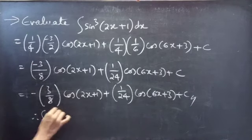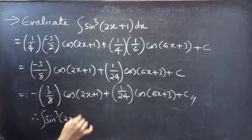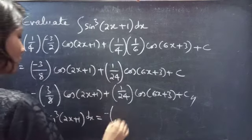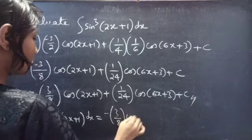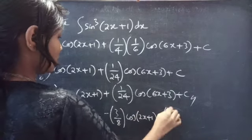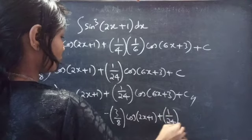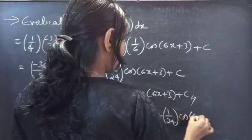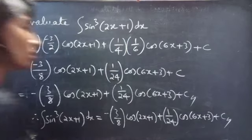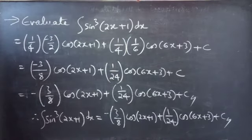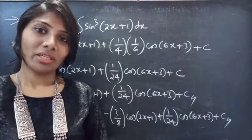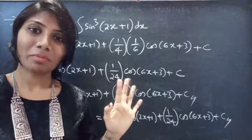Therefore, the integral of sin³(2x+1) dx equals minus 3/8 cos(2x+1) plus 1/24 cos(6x+3) plus c. This completes the problem. So we have seen a problem from integration in this video. Hope you will understand. We will see you in the next video — until then, bye bye.